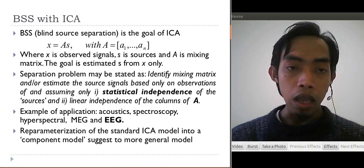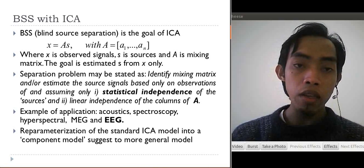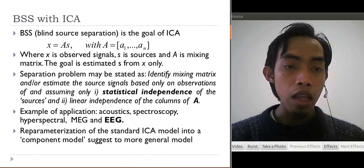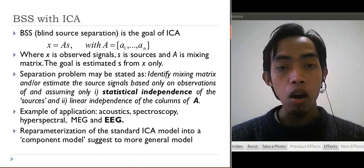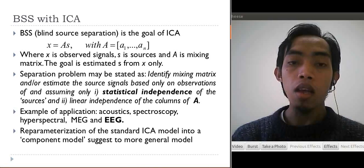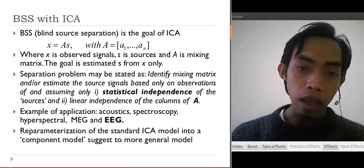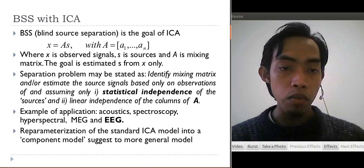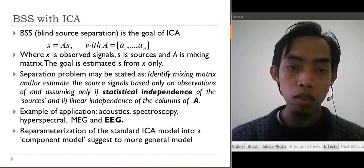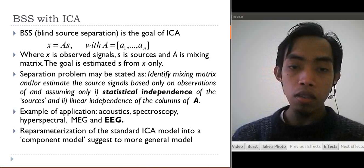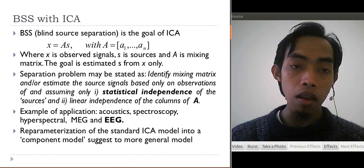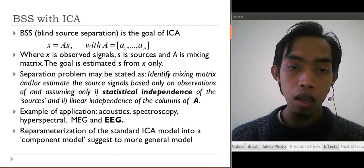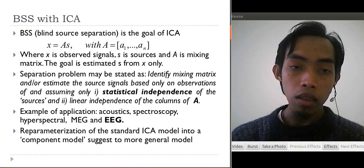BSS with ICA. BSS, or Blind Source Separation, is the goal of ICA. It is formulated as X equals A multiplied by S, with A or mixing matrix A1 until AN, and X is observed signals and S is source signals. The goal is to estimate S from X only. We just have X signal and we want to get S signal.